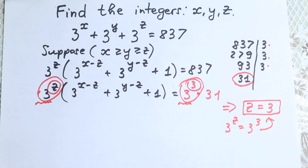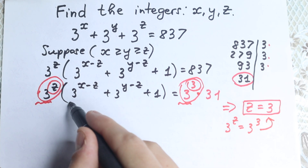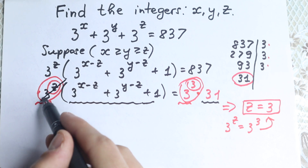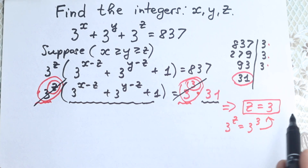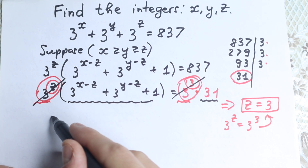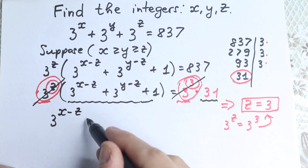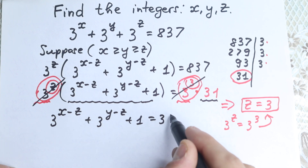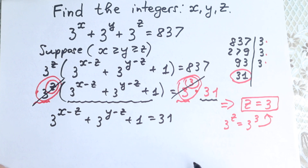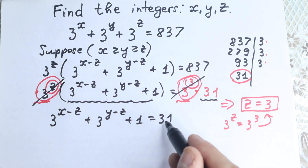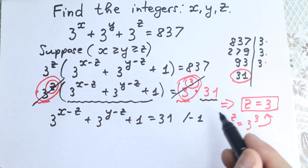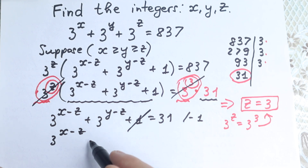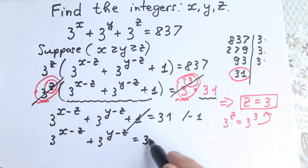Now we still have the expression in parentheses, which equals 31, because we cancelled the 3^z factor. So let's rewrite: 3 to the power x minus z, plus 3 to the power y minus z, plus 1, equals 31. Subtracting 1 from both sides gives us 3 to the power x minus z plus 3 to the power y minus z equal to 30.